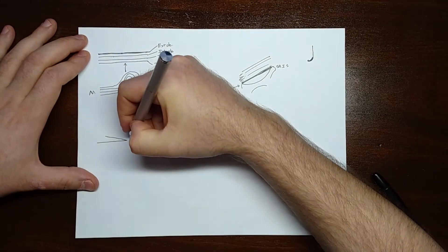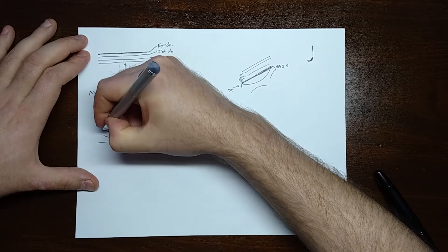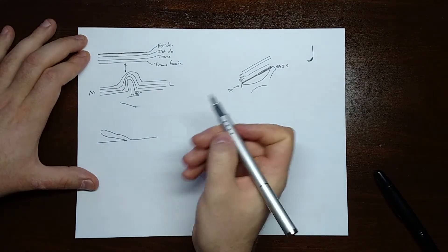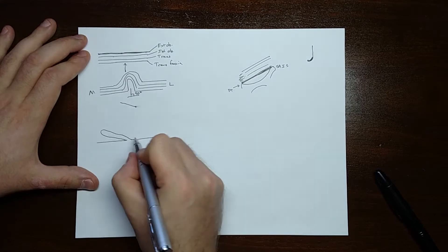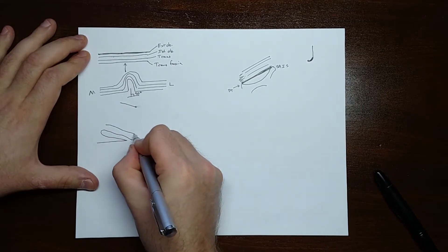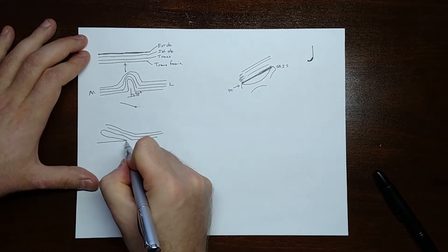Let's pretend this is the transversalis fascia, which becomes the processus vaginalis. And then, the external oblique kind of comes like this, internal oblique kind of comes like this, and this forms your superficial ring.